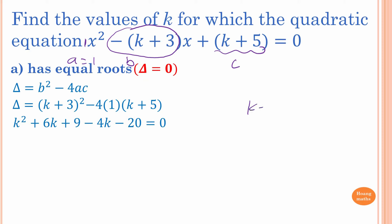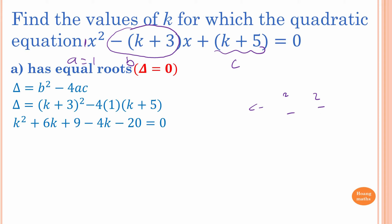To expand (k+3)² using perfect square: k squared, then k times 3 is 3k doubled gives 6k, and 3 squared gives 9. So (k+3)² = k² + 6k + 9. Simplifying the full discriminant expression gives us k² + 2k minus 11.